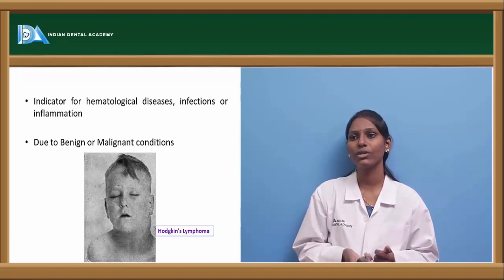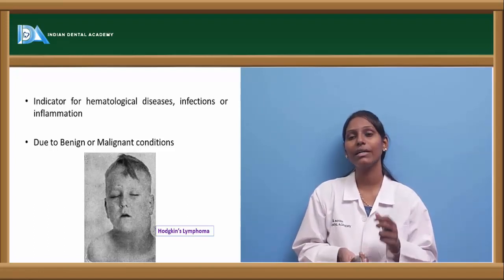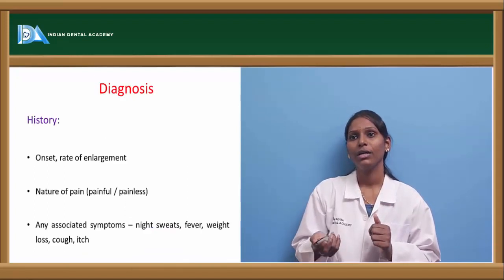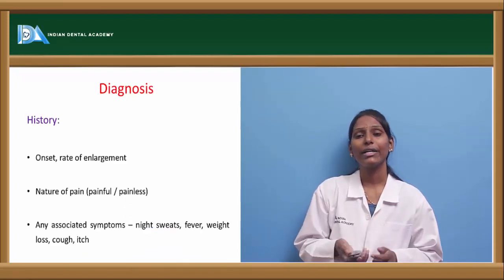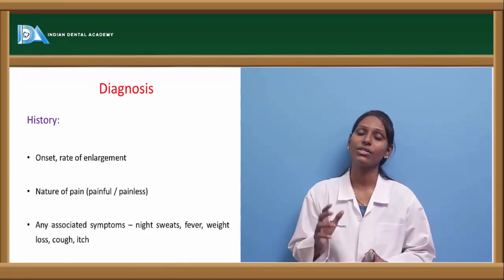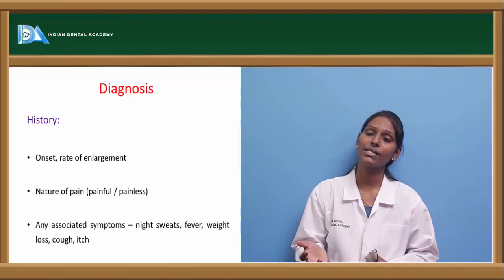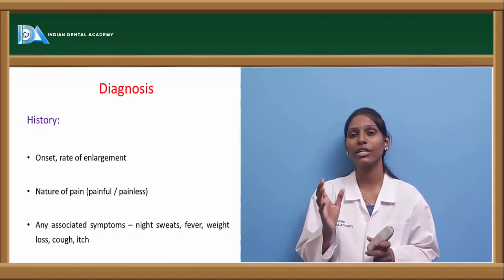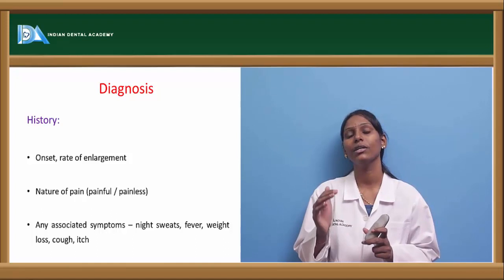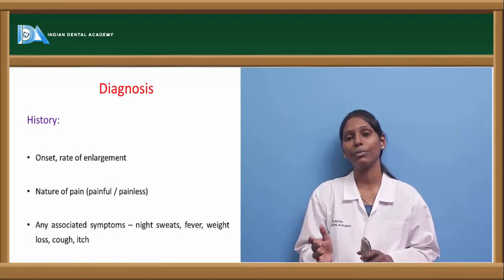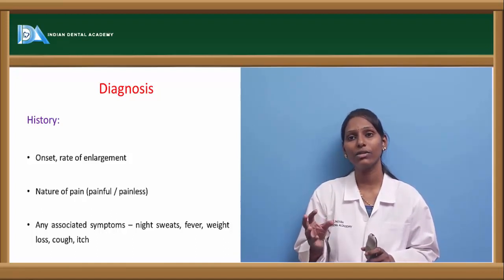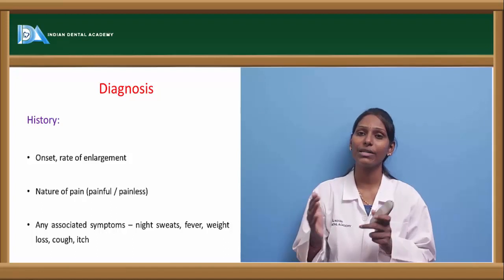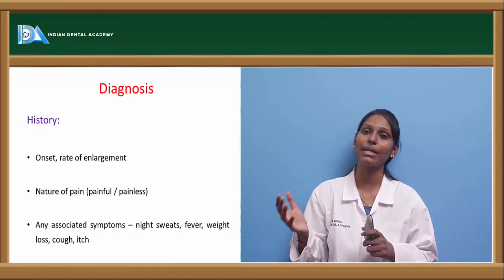Here is a picture showing Hodgkin's lymphoma where there is a cervical lymphadenopathy in this child. Coming to diagnosis, the primary thing is history. History of how the generalized lymphadenopathy has manifested will give us a clue of the underlying condition — for example, onset of the lymphadenopathy, whether it is sudden onset or progressive, and the rate of enlargement.